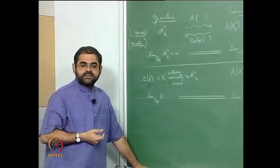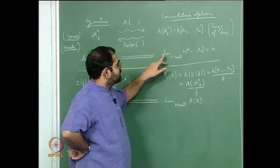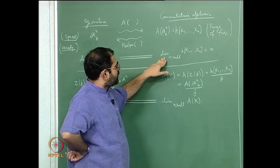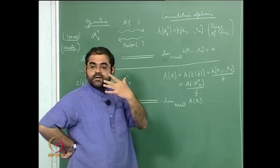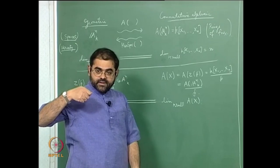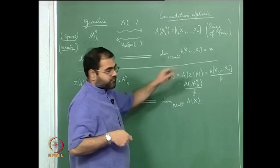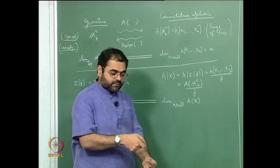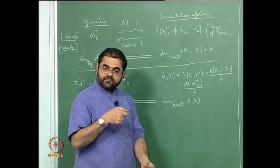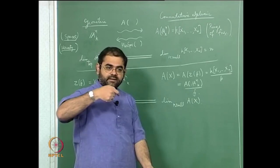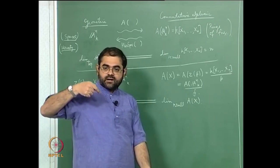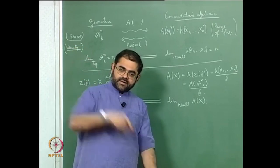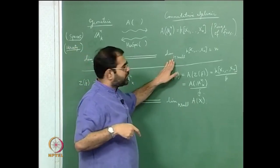The largest strictly increasing chain of prime ideals of maximal possible length is n+1. The easiest example: start with the zero ideal, then the ideal generated by x1, then by x1 and x2, and at the i-th stage by x1, x2, ..., xi, going all the way up to n. This is a strictly increasing chain of prime ideals of length n+1, so the Krull dimension becomes n.